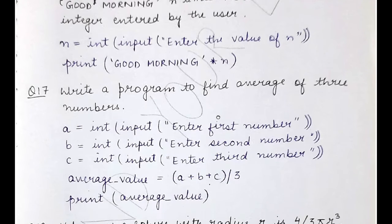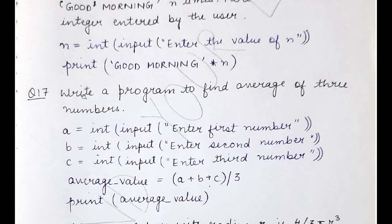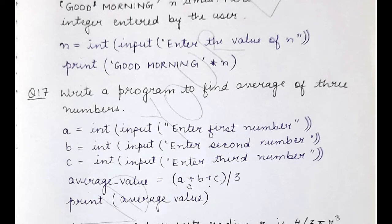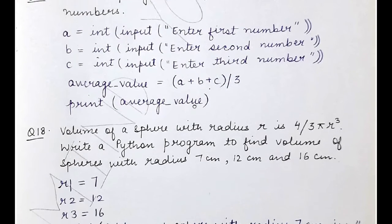Question 17 asks you to write a program to find the average of three numbers. You first need to take user input for the three numbers whose average you want to calculate. I have written three input statements and stored the three numbers in variables a, b, and c. To calculate the average, I applied the formula (a + b + c) / 3 — make sure you include the parentheses so the summation is computed before dividing by three. Then you print the computed average.